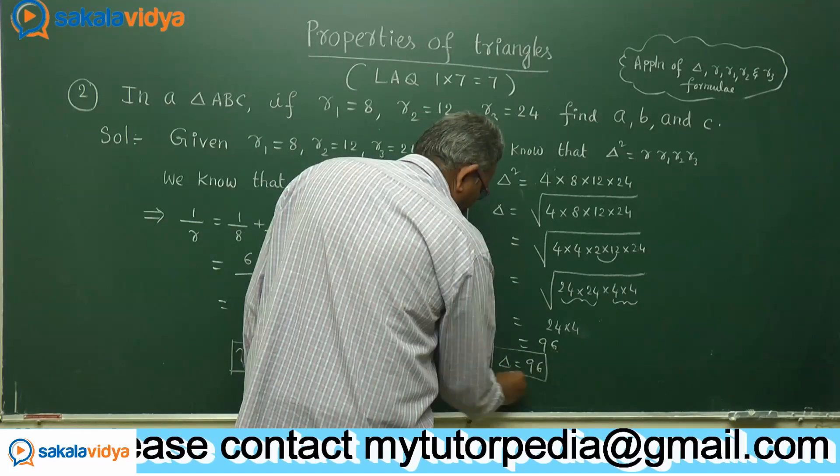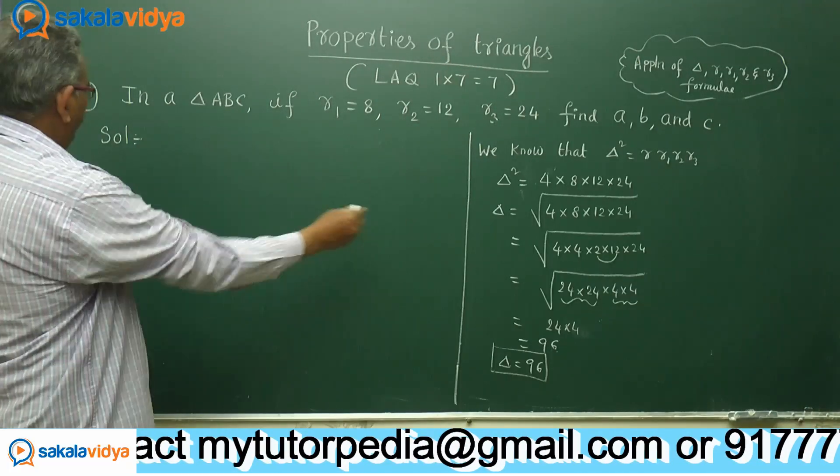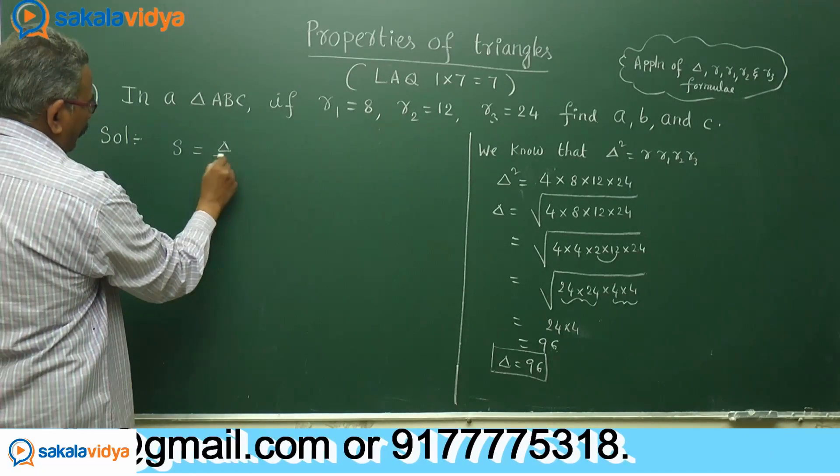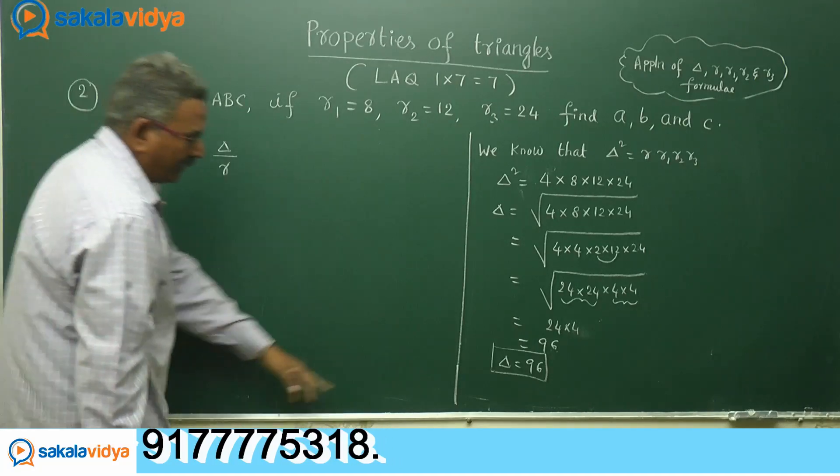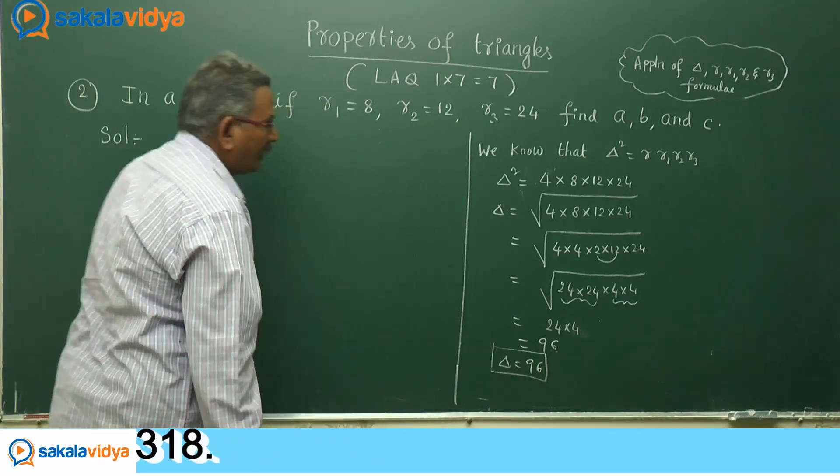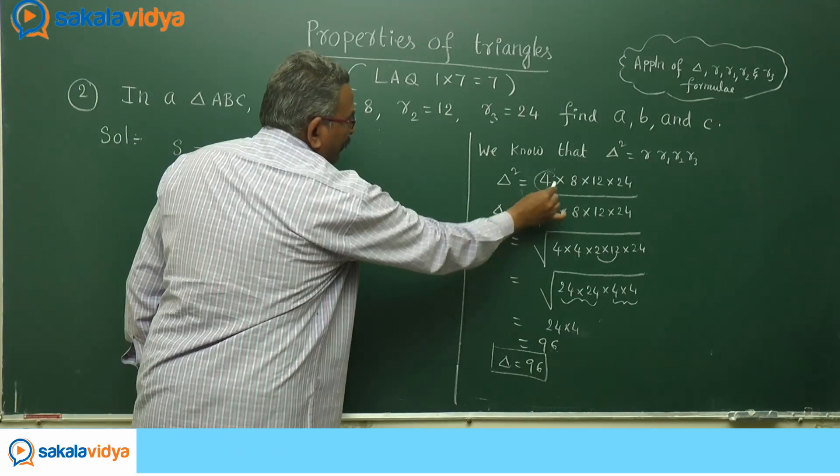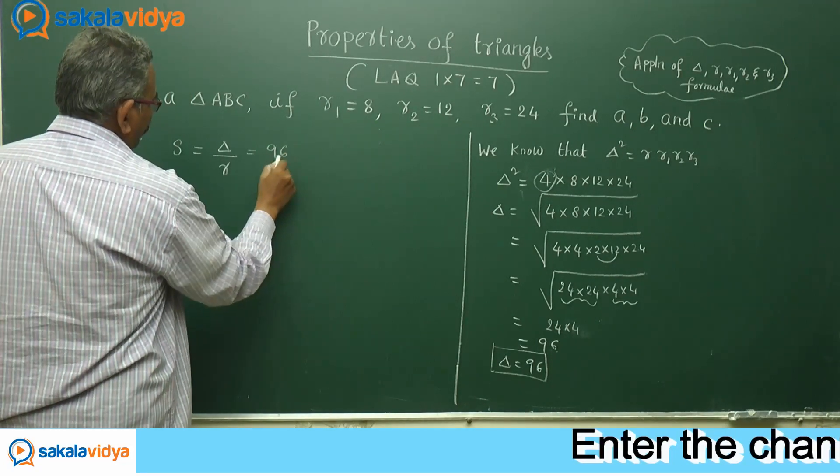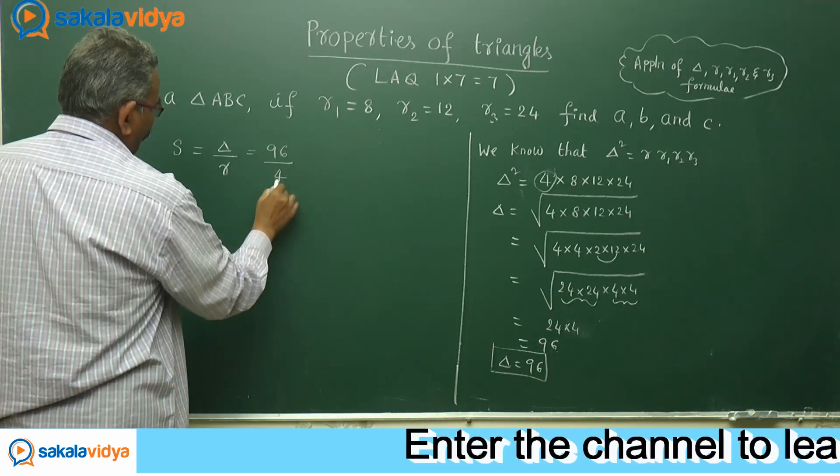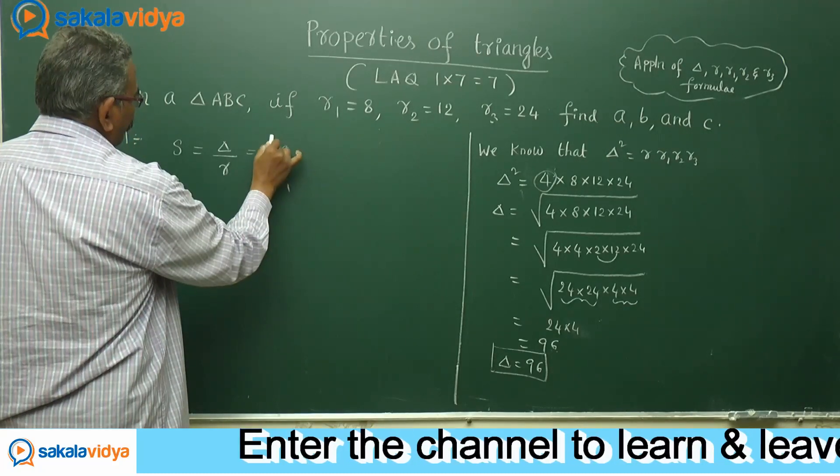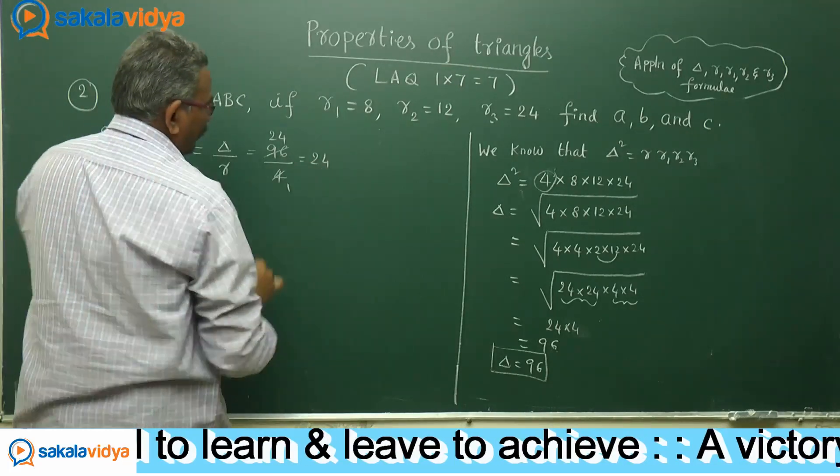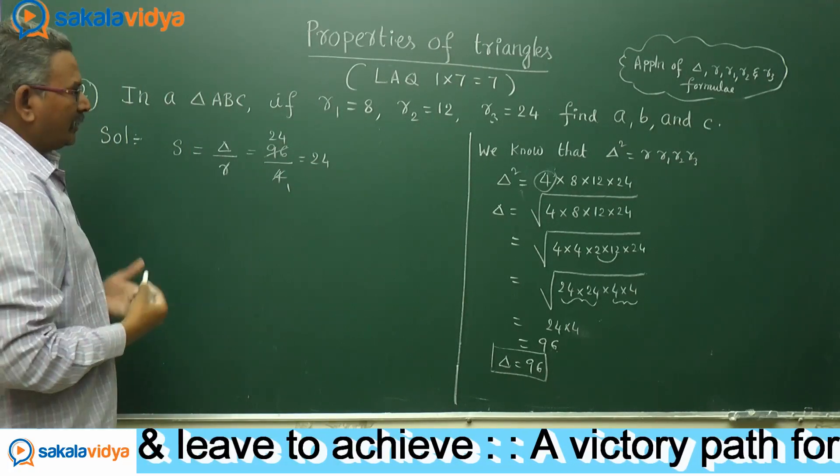Delta equals 96 square units. This is step 2. S value: S equals delta by r. Delta is 96, r value is 4. 96 by 4 equals 24. S is 24.